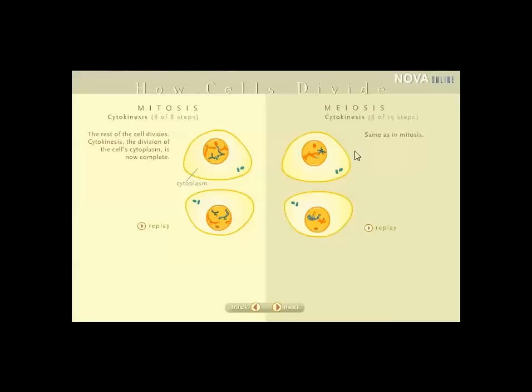That concludes mitosis. Meiosis, when you're making sperm cells and egg cells, requires another round — because a sperm cell can't have 46 chromosomes; it can only have 23. When you put 23 and 23 together, you get 46. Otherwise you get something that is not a normal human. Post any questions that you have, and thank you very much.